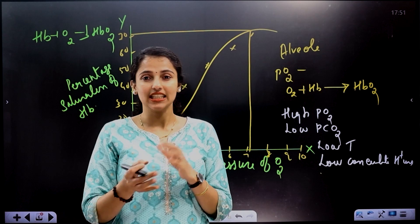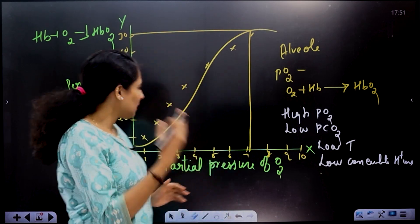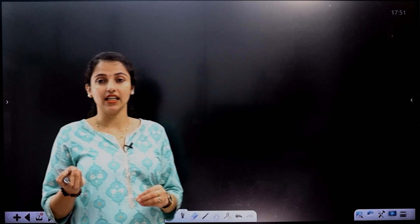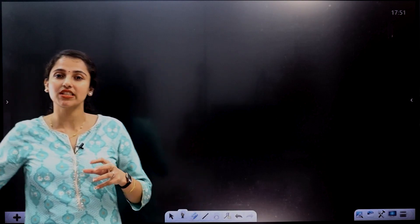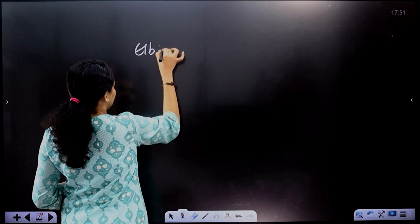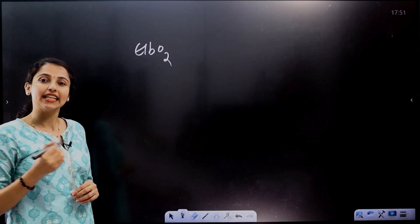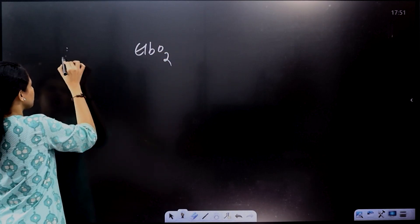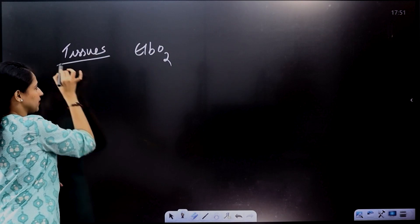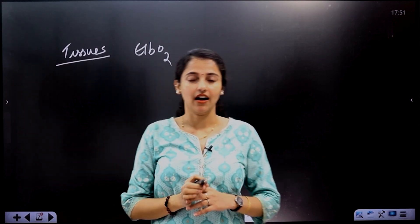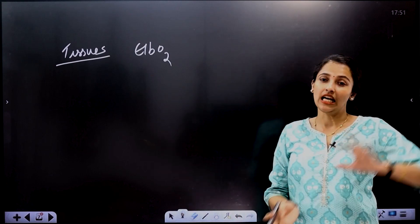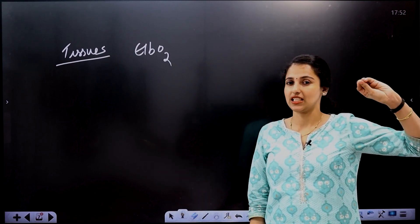Where do these conditions exist? At the alveoli. When oxygen is present, these factors result in oxyhemoglobin formation. At the tissues, however, we need oxyhemoglobin to dissociate to release oxygen, because there are many metabolic activities occurring.